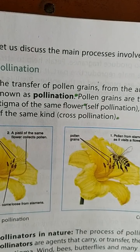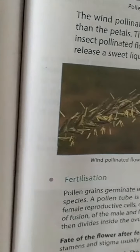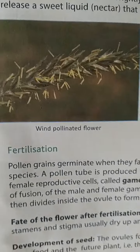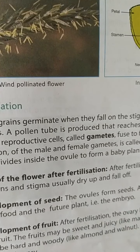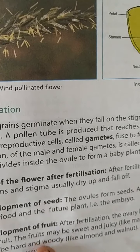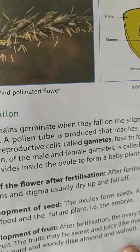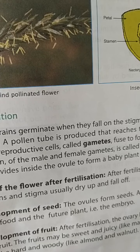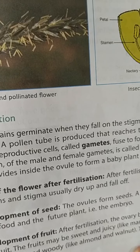Fourth question: how are fruits formed? See page 137 — development of fruit. After fertilization, the ovary begins to grow and forms the fruit. The fruit may be sweet and juicy like mango and orange, or hard and nutty like almond and walnut. The fruit is thus a ripened ovary. This complete paragraph is answer E4.